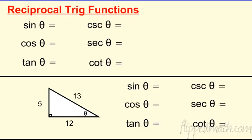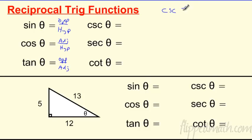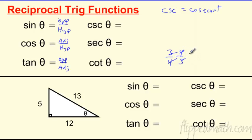Before going further, let's talk about reciprocal trig functions. We already know sine is opposite over hypotenuse, cosine is adjacent over hypotenuse, and tangent is opposite over adjacent. Now we have new functions: cosecant (CSC) is the reciprocal of sine — flip the fraction — so it's hypotenuse over opposite. Reciprocal just means flip the fraction, like how 3/4 becomes 4/3.